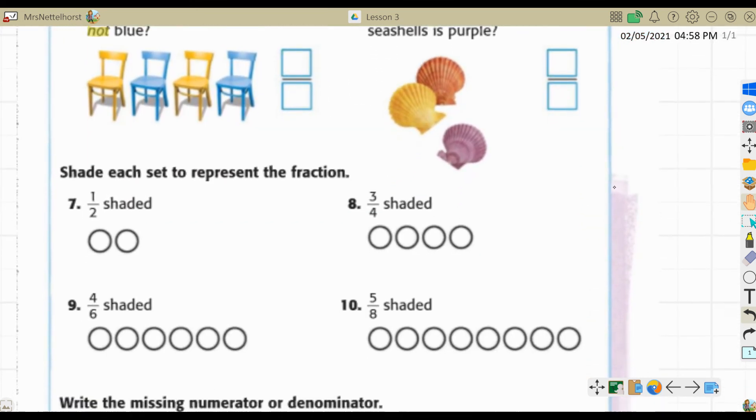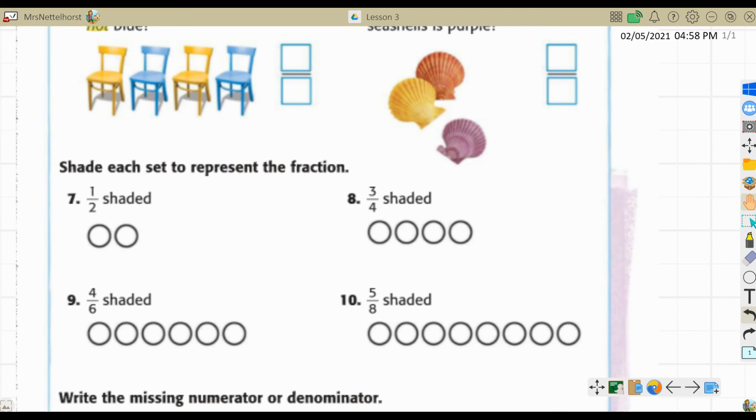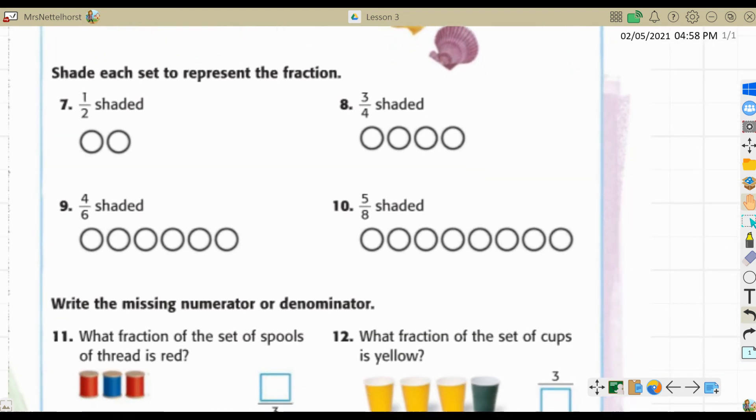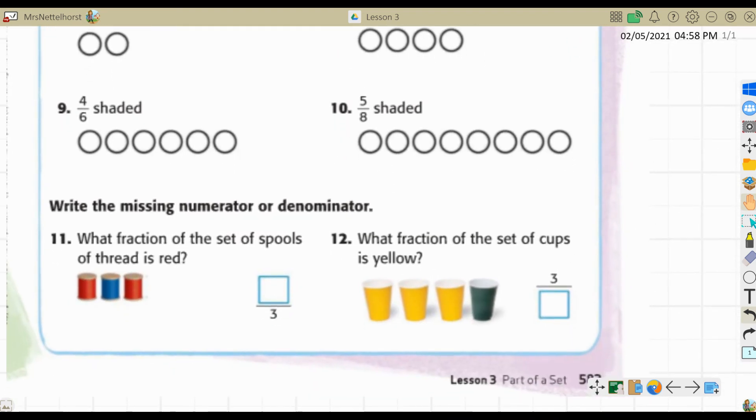You're going to write the fractions for those things following the directions. Now you're going to shade each set to represent the fraction. So you are going to have to look at that numerator and decide how many to shade in. And it doesn't matter which ones you shade in as long as you shade in the right number. If you just want to put an X over it, that's fine.